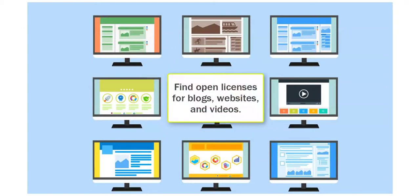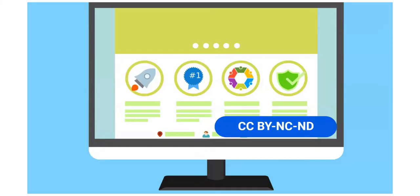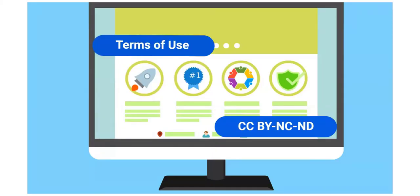Blogs, websites, and videos can all have open licenses, and they're easy to find through Google search. What can be tricky on the open web is finding and interpreting the licenses and terms of use.